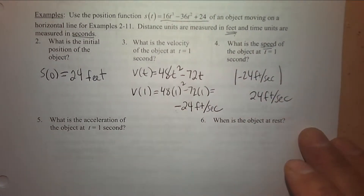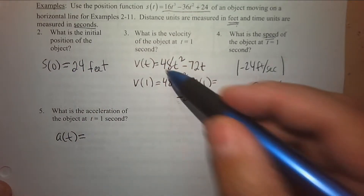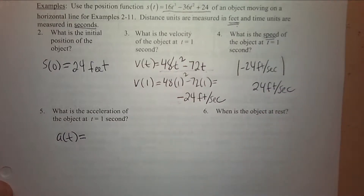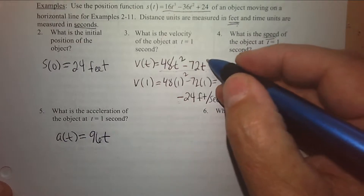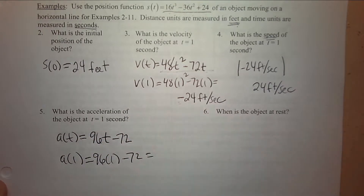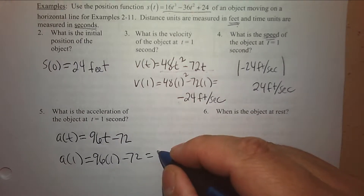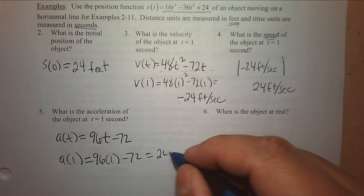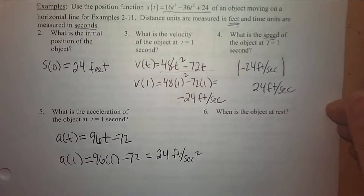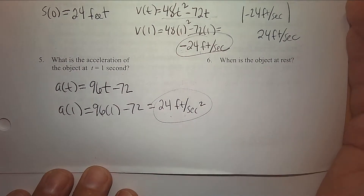What is the acceleration at t = 1? Taking the derivative of the velocity: 2 × 48 = 96t, minus 1 × 72 = 72. Plugging in t = 1: 96 minus 72 gives acceleration of 24 feet per second squared. Is the object speeding up or slowing down? At t = 1, velocity is negative 24 and acceleration is positive 24 — they don't match. One is negative and one is positive, so it's slowing down because they're working against each other.